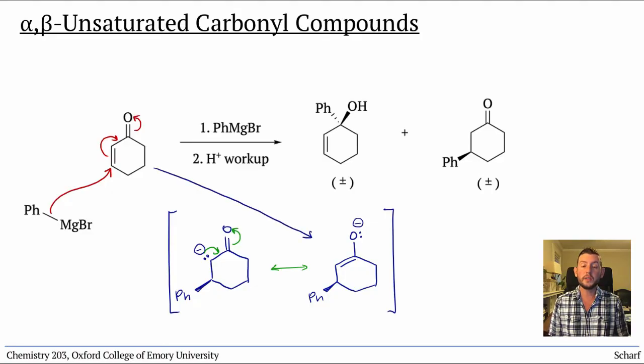We call this conjugate addition to the alpha-beta unsaturated carbonyl. The intermediate we form here is called an enolate, and it is an extraordinarily important intermediate in chemistry.